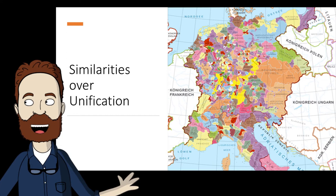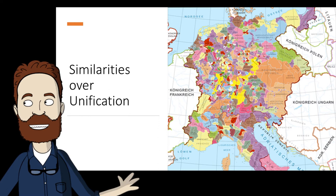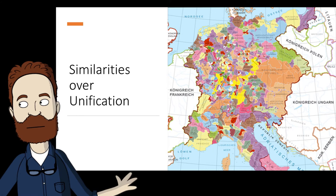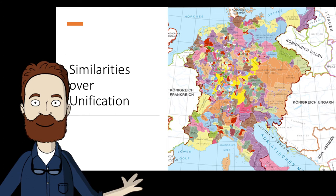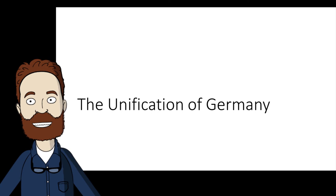The final victory for each country would be achieved through the efforts of a master politician and statesman — from Cavour in Italy to Bismarck in Germany. Both men would find the basis for unity in force. We're going to divide this lecture into two parts: first, we'll handle the unification of Germany, and then in the second part we'll discuss Italy.